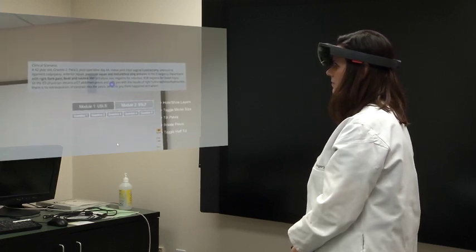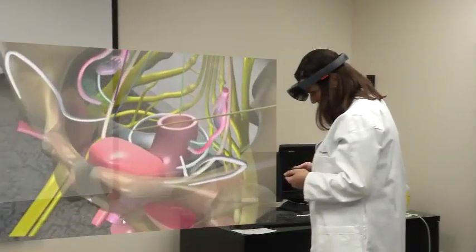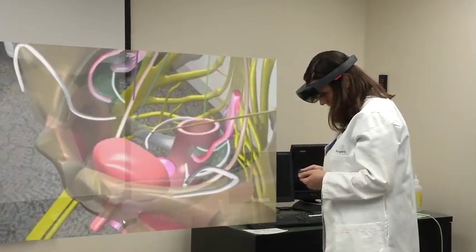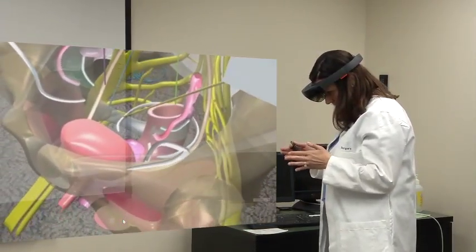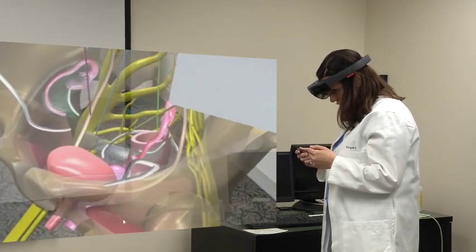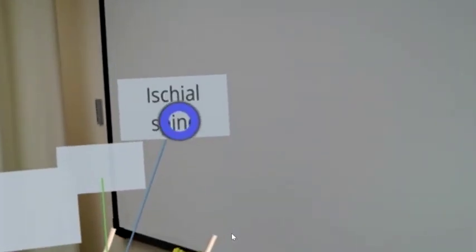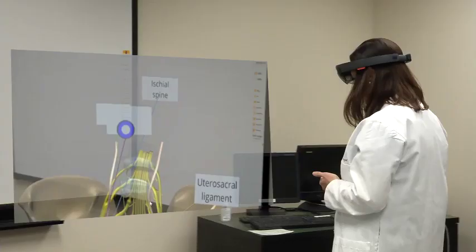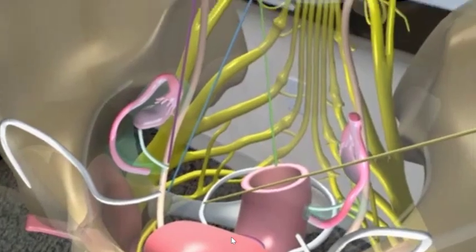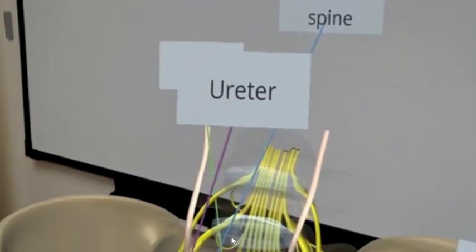Identify the following structures on the model. The first question is to identify the ischial spine. So I here look into the pelvis and find the ischial spine marked with the blue arrow and I follow that arrow out to its box. Yes. Well done. Ureter. Yes. Well done.